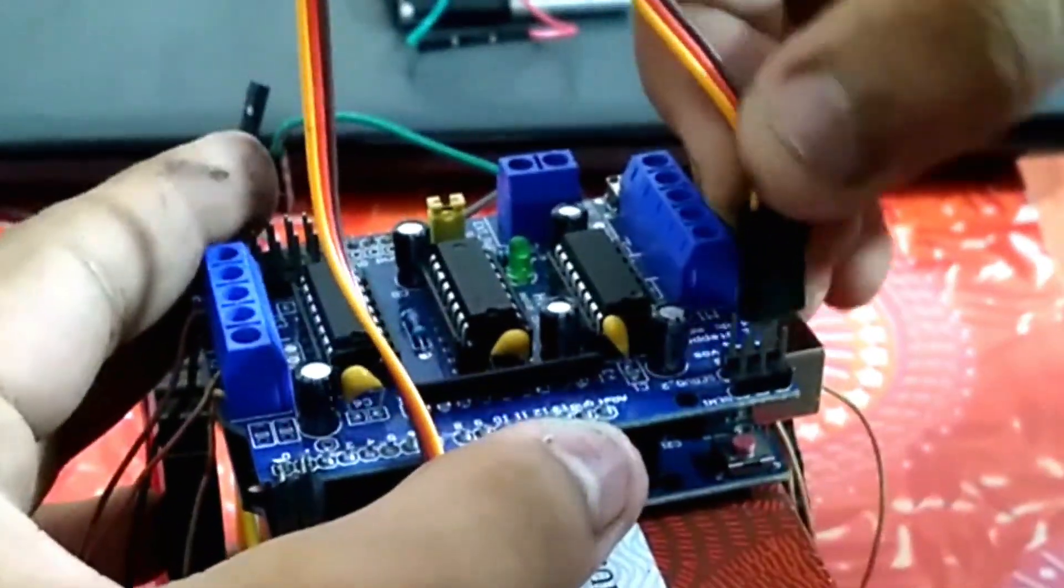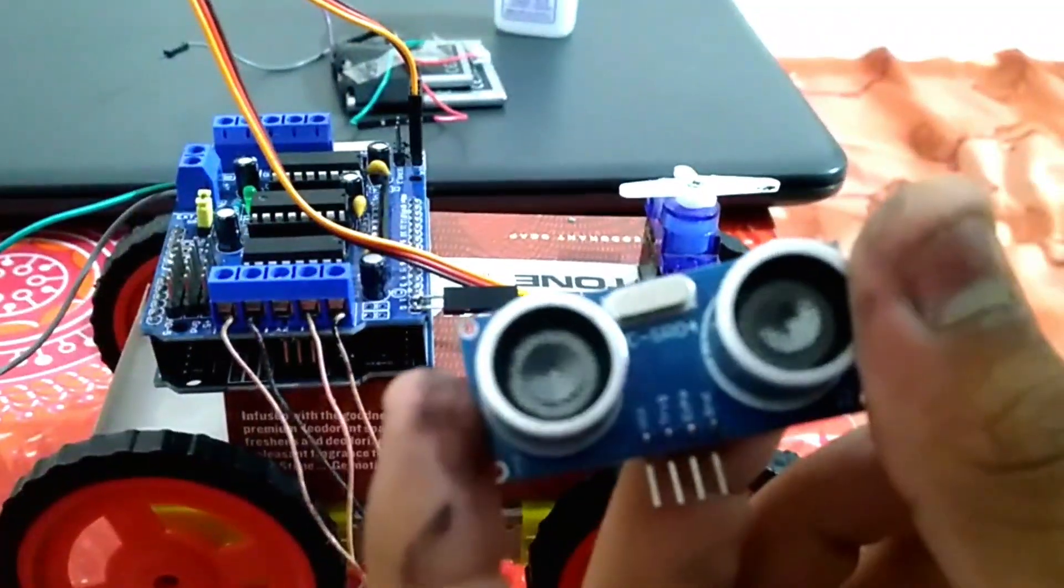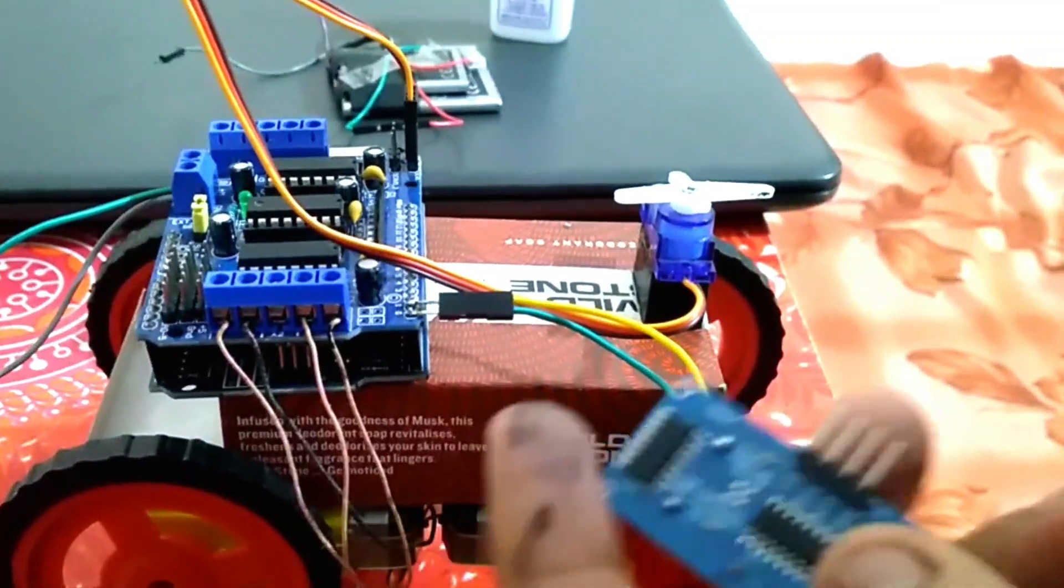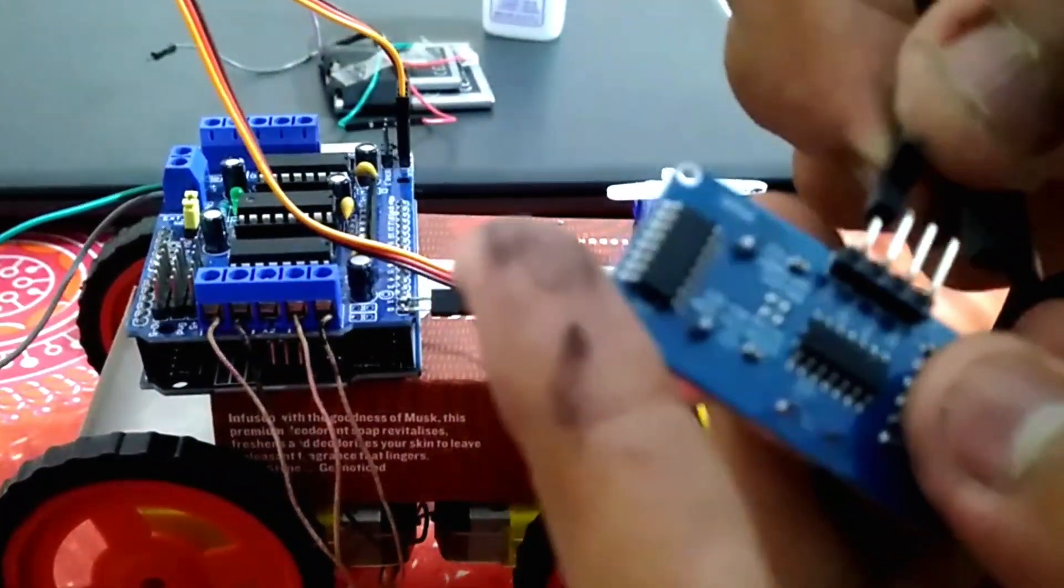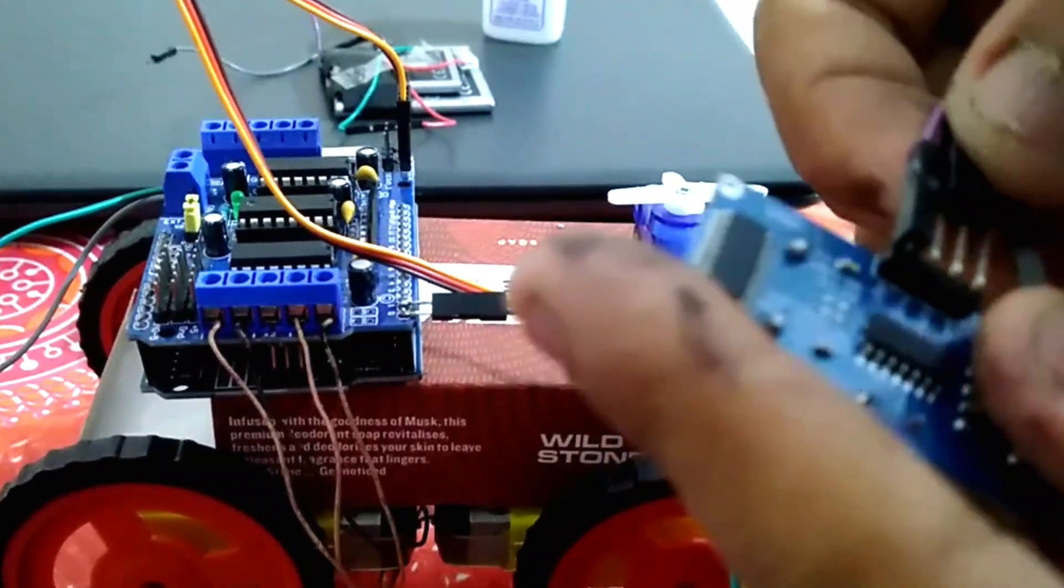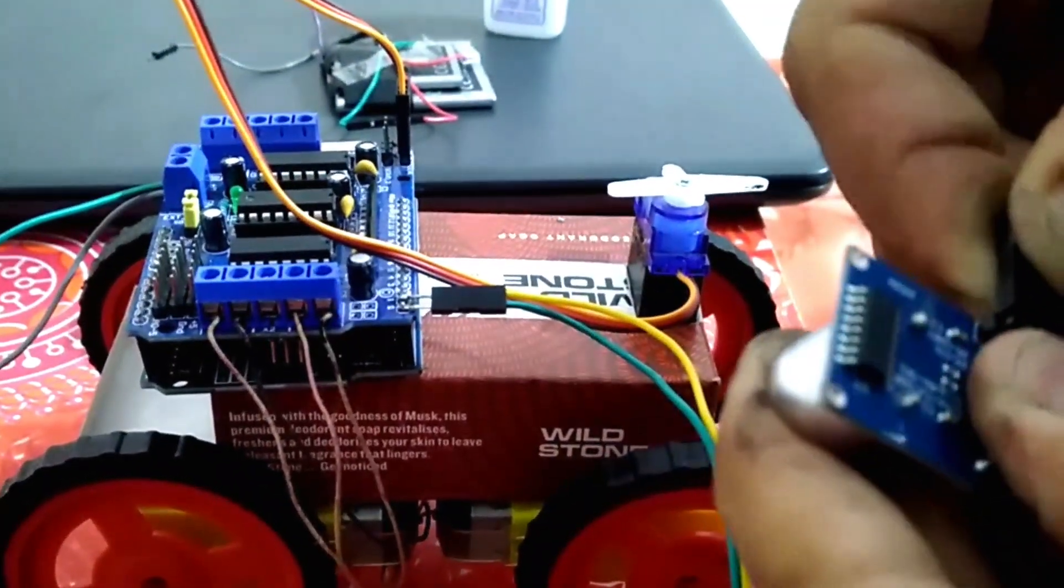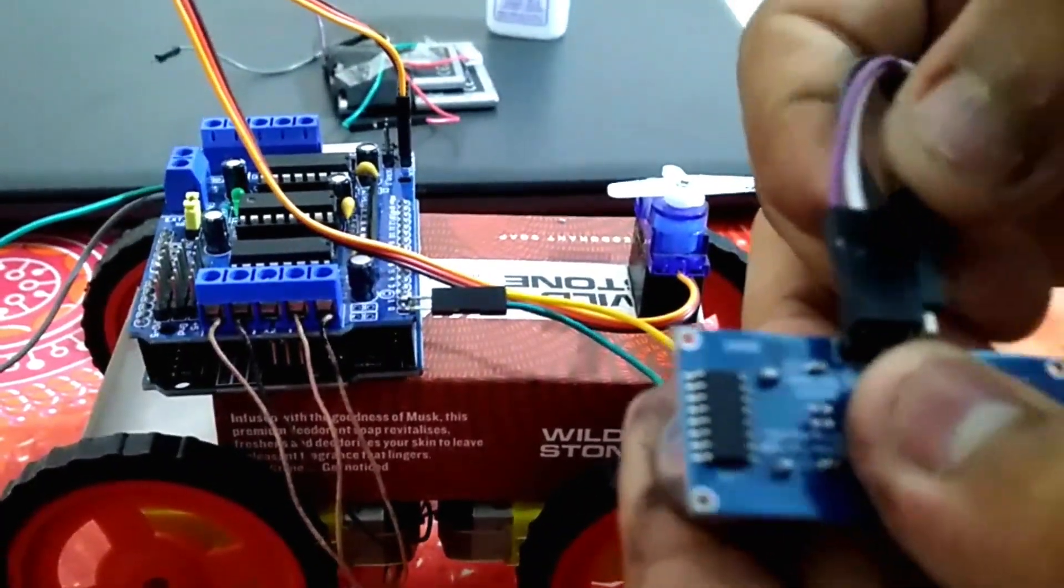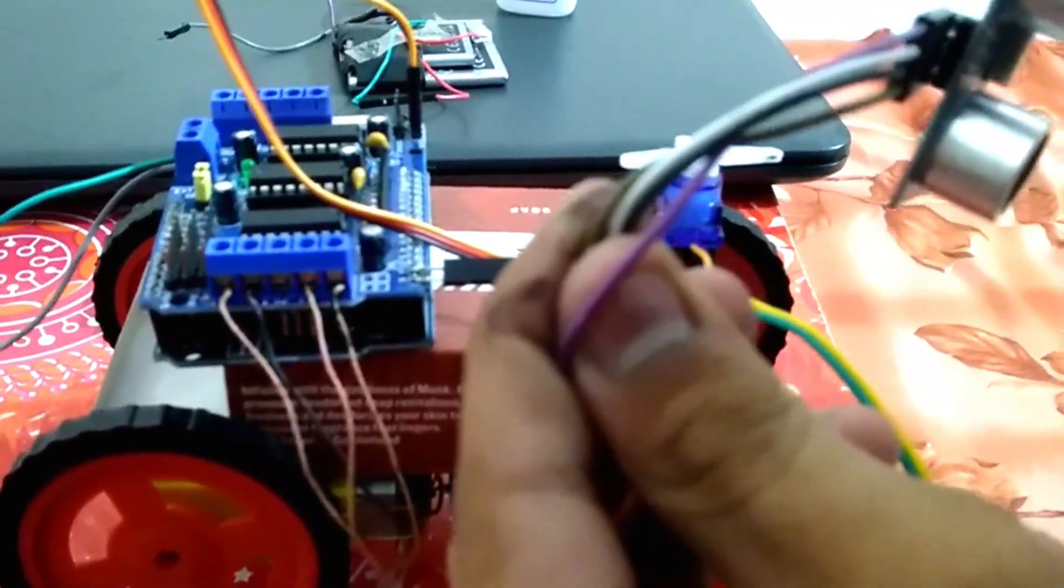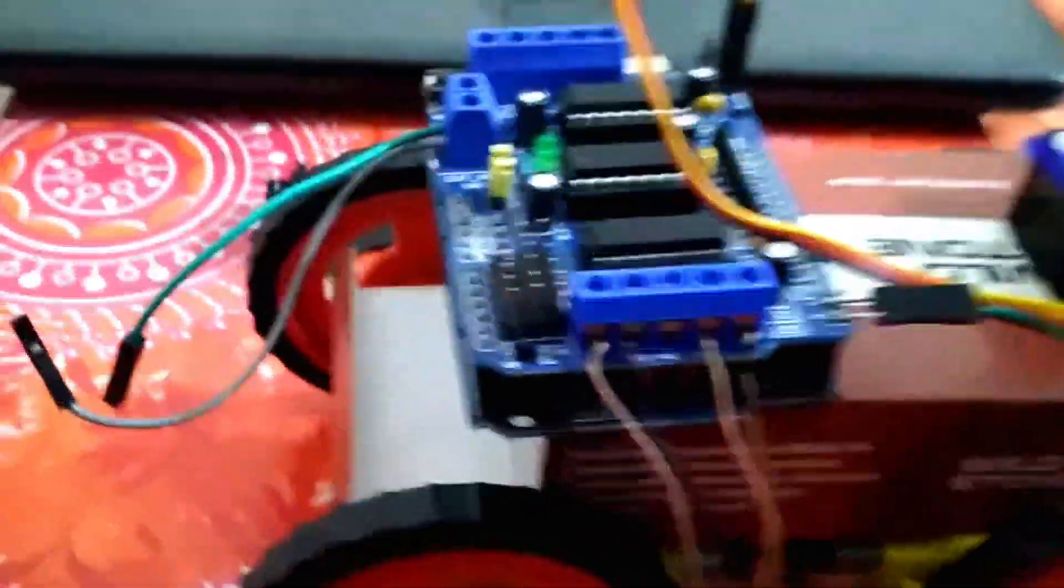Here I'm connecting my servo motor. Here I've took the terrible eyes of our car, and now I'm going to fix all the wires respectively. So be careful and see the diagram as well. And here are the male header pins on which we have to connect our ultrasonic sensor.